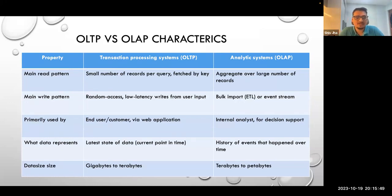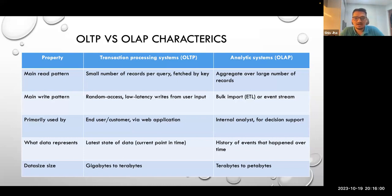In your transactional database, you are looking for the state of data at this instant in time. While in analytics databases, you have historical data along with some of the latest data — not quite real-time, maybe near real-time.